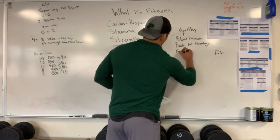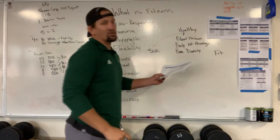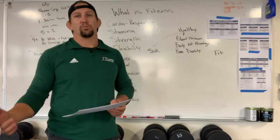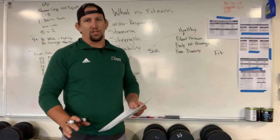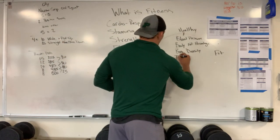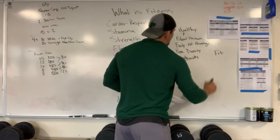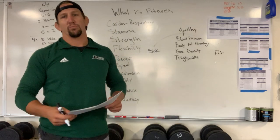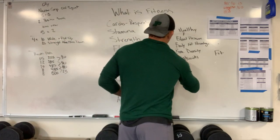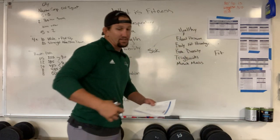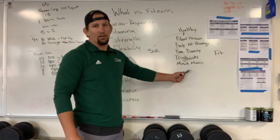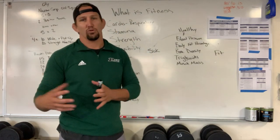Bone density is usually measured through X-ray. Dense bones are less likely to break, so it's super important. Triglycerides are types of fat in your blood — and cholesterol is another thing on the list. And then there's muscle mass. There is a very strong correlation between the amount of muscle mass and longevity. Especially leg strength: if you've got strong legs, you are much more likely to live longer and have a better quality of life later on.